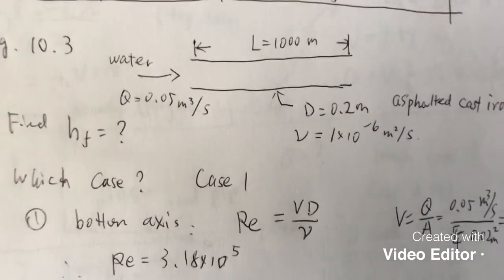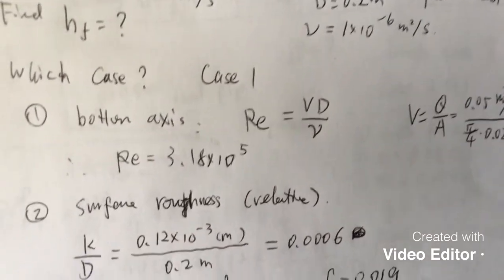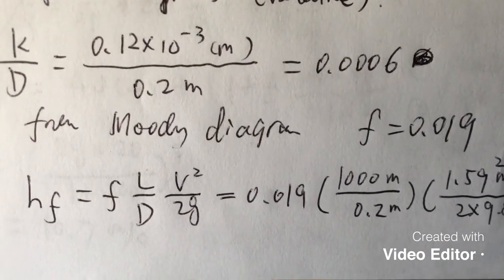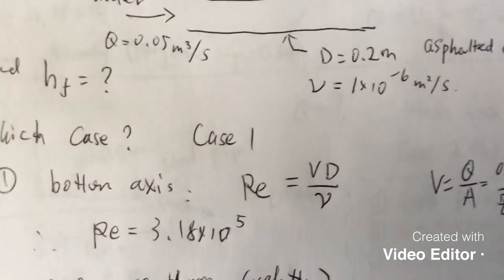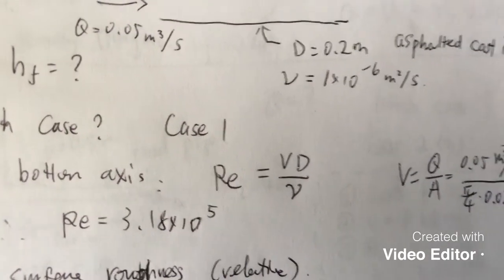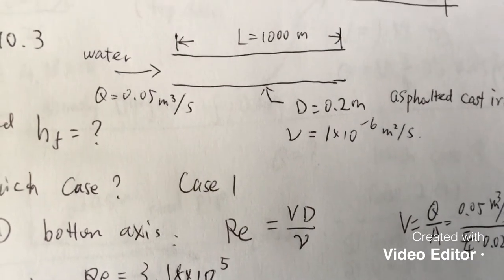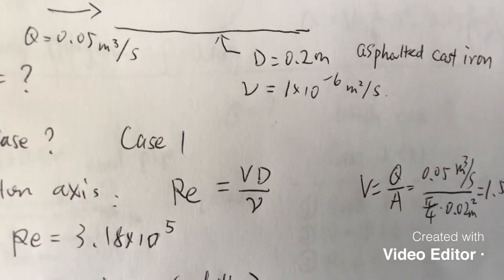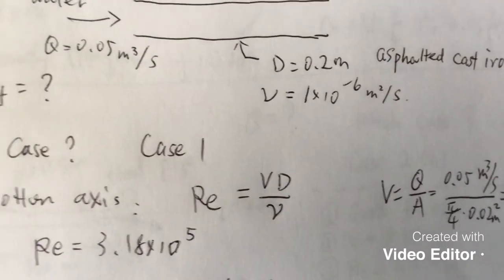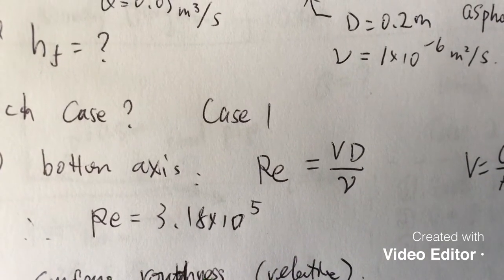For Case 1, we use the Darcy-Weisbach equation and the bottom axis of the Moody diagram. Reynolds number is V·D divided by ν. Velocity is not directly given, but since we know the flow rate and diameter, we know the cross-sectional area. Velocity equals flow rate divided by cross-sectional area, which gives 1.59 m/s. With diameter and viscosity given, the Reynolds number is 3.18 × 10⁵.